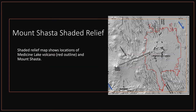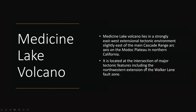Looking at a shaded relief map, Mount Shasta is here and Medicine Lake volcano is about 30 miles away. The red outline shows the extent of Medicine Lake volcano — this is the main dome, but this represents the full extent of it. Medicine Lake volcano lies in a strongly east-west extensional tectonic environment, slightly east of the main Cascades in the Modoc Plateau province.